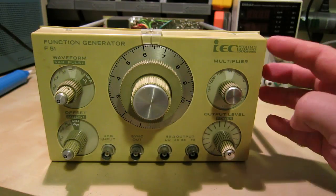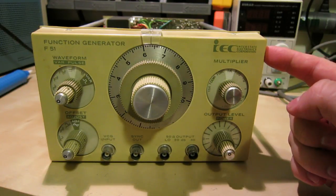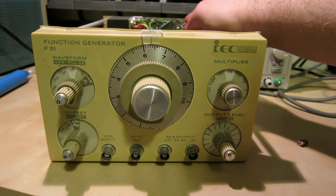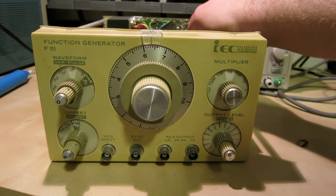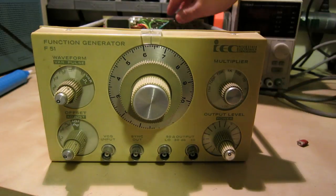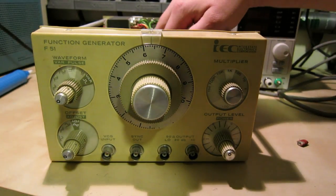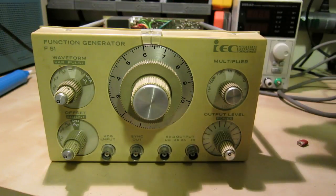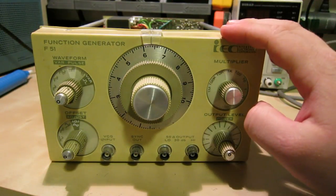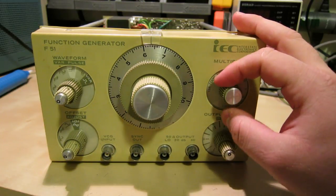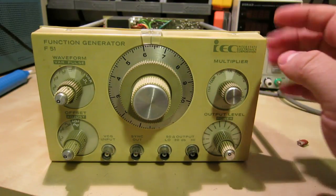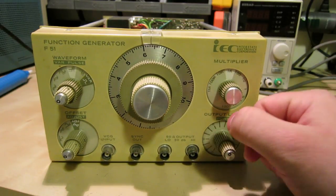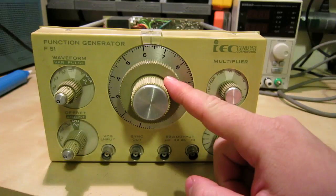Hi, I've got this Interstate Electronics Corporation F-51 Function Generator. This is like 1976 or 77, I can't remember. Oh no, sorry, 77, yeah. There's a 1974 chip there as well. So this thing doesn't work, when it's powered on it just outputs DC on the outputs and does nothing. So I'm going to try and get it working again.